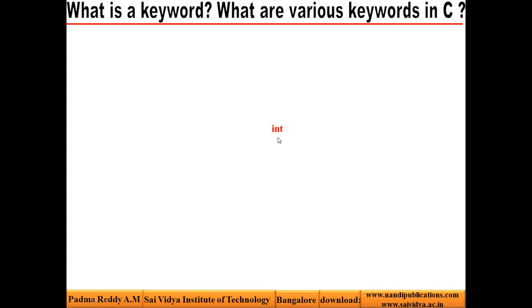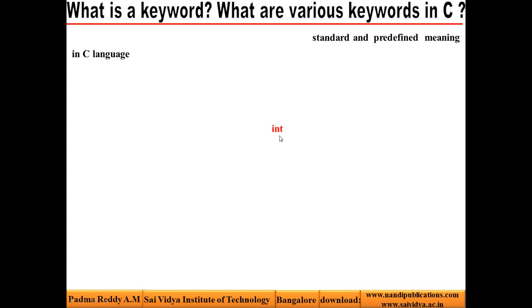We don't know what is the meaning of this word, so we cannot identify it. But the compiler can identify what this word is. This word has a standard and predefined meaning in C language. Hence, we call such words as keywords. Any word that can be understood by the compiler, we call it a keyword.